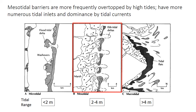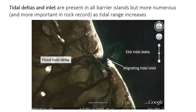On a mesotidal coastline, the tidal range is greater, so more water must be moved past the barrier during each tidal cycle, and as a result the tidal inlets are numerous and tidal currents dominate sediment transport much more so than waves. In this tidal inlet and tidal delta complex, there is a flood tidal delta on the lagoon side or back barrier side of the islands, composed of subaqueous dunes and sandbars that form as the incoming flood tidal current spreads out and decelerates in the lagoon. The flood tidal delta forms a significant portion of the lagoon deposits and has high preservation potential in the rock record.